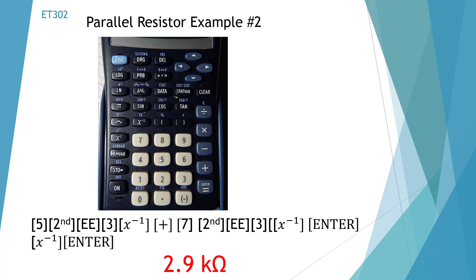So we have 5, second EE 3, inverse. So what we have here is 5k, so 5 times 10 to the 3. All right, then we're going to add 7, second EE 3 being k. We're going to inverse it. We're going to push the enter key.